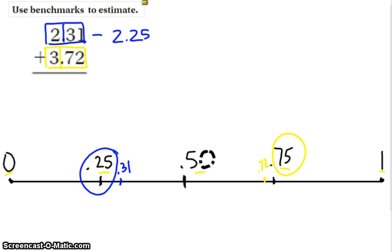So 3 and 72 hundredths, I'm going to estimate to be 3 and 75 hundredths. Now, I'm simply going to add 2 and 25 hundredths to 3 and 75 hundredths.